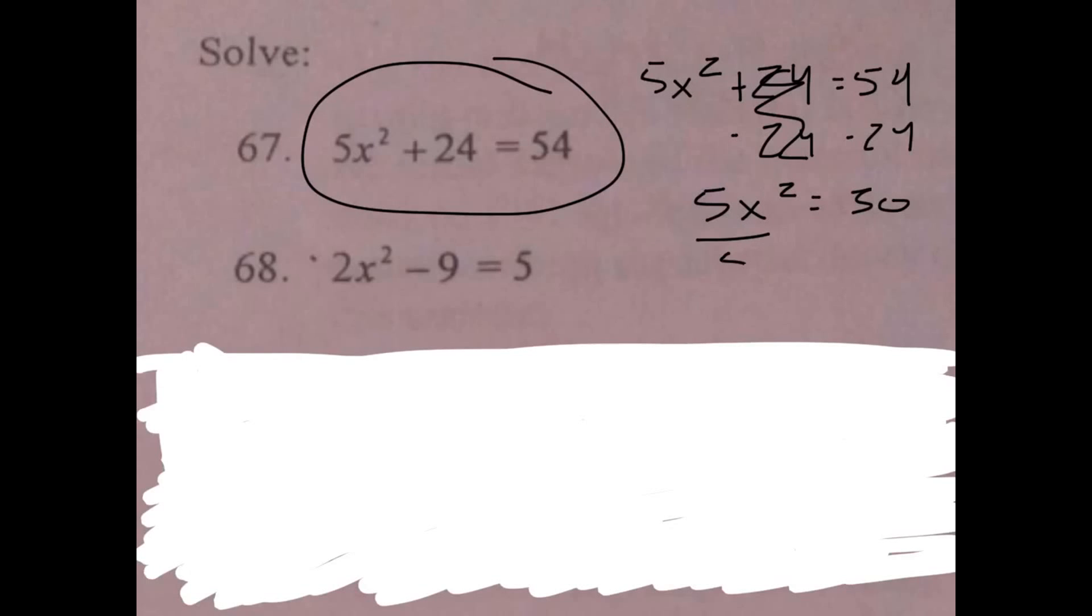And then we got to get rid of the 5, so divide by 5. Cancels out, that's x² = 6. Now you still got to get rid of this squared. What's the opposite of squaring something? That's right, square root. Cancels out, x equals, and you want to put plus or minus radical 6.